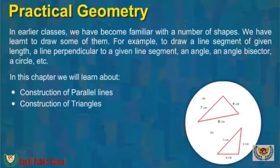In earlier classes, we have become familiar with a number of shapes. We have learned to draw some of them, for example, to draw a line segment of given length, a line perpendicular to a given line segment, an angle, an angle bisector, a circle, etc. In this chapter, we will study the following concepts: construction of parallel lines and construction of triangles.